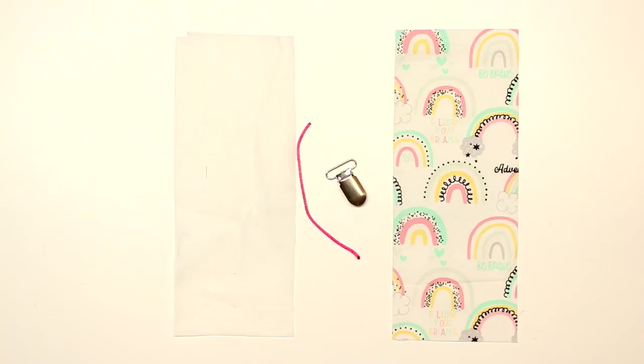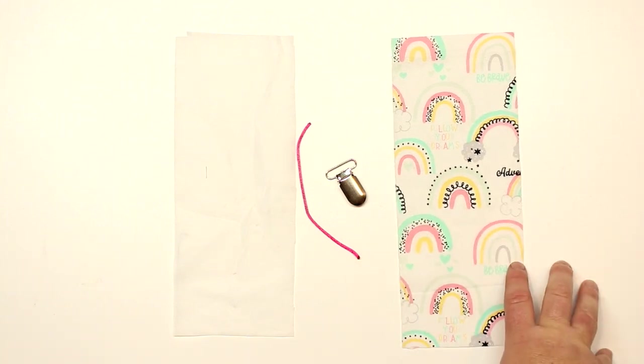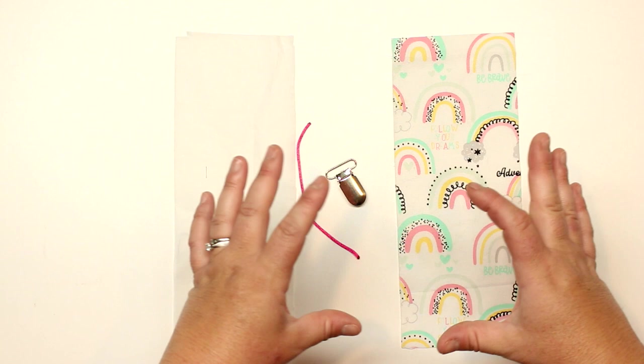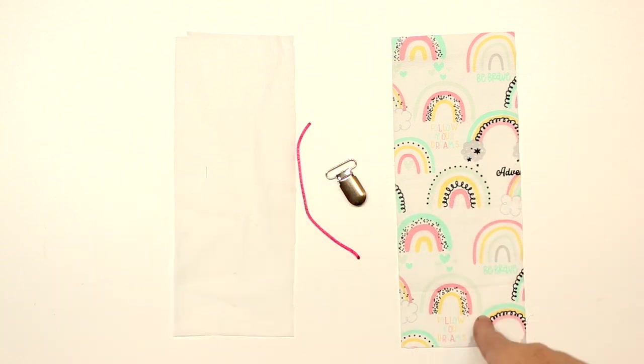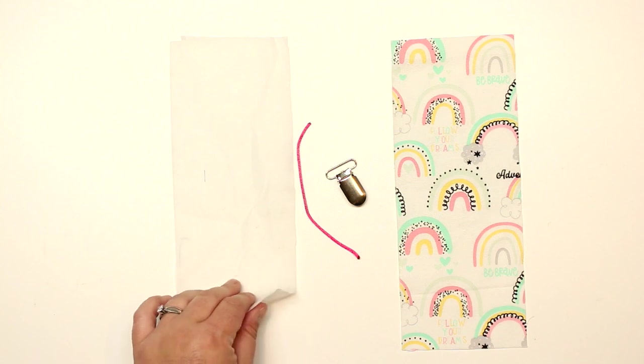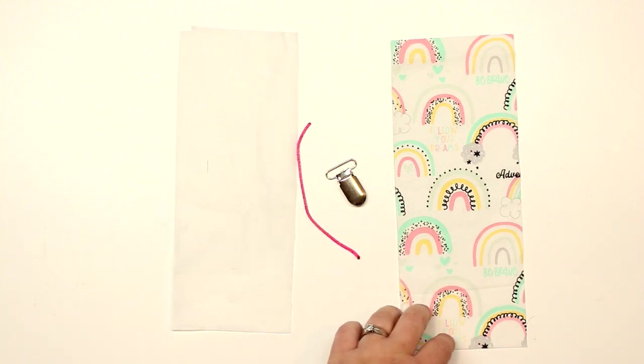You don't need very much to make a pacifier clip. All you need is a little piece of fabric. This is a cotton fabric. I just got this over at Michael's or Walmart. They have little fat quarters, little square pieces of fabric, so I just got a really cute print. I'm putting a medium white interfacing on the back.